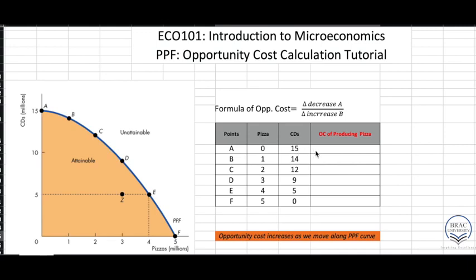Since we have the numbers in numerical terms, we shall now be able to calculate the opportunity cost. While learning to calculate opportunity cost, we will also try to prove the point that opportunity cost increases as we move along the PPF curve. This should sound relevant to you if you have seen the second lecture, where we proved theoretically why opportunity cost increases along the PPF curve. This time we are going to see this mathematically.